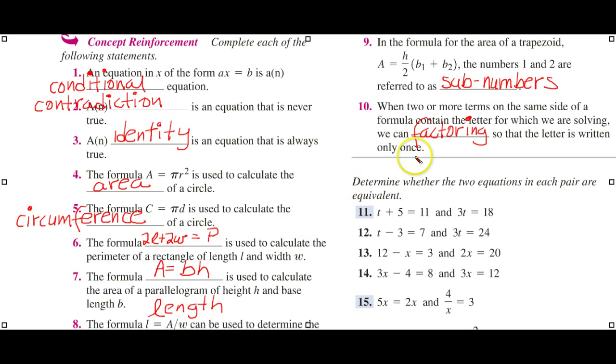And we did this example as well of factoring. This is called b sub 1 plus b sub 2, refers to the two bases that we find in a trapezoid.